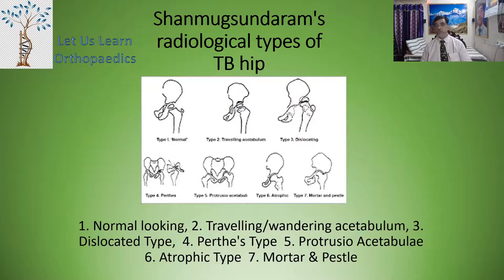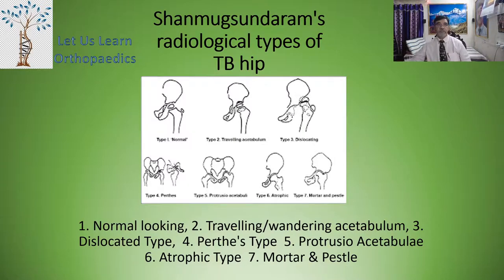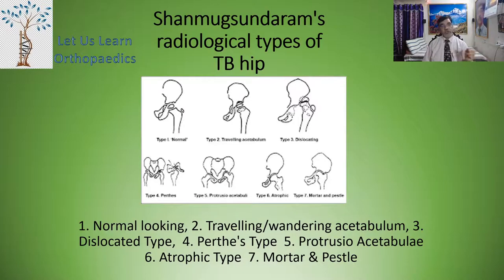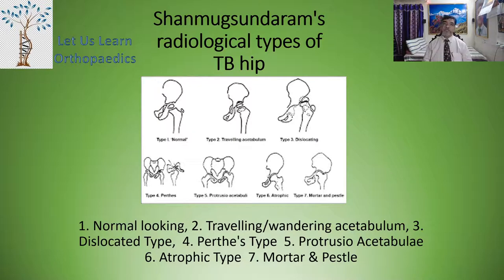The seven types include: Type 1 — normal looking; Type 2 — traveling or wandering acetabulum; Type 3 — dislocated type; Type 4 — Perthes type; Type 5 — protrusio acetabuli; Type 6 — atrophic type; Type 7 — mortar and pestle type.